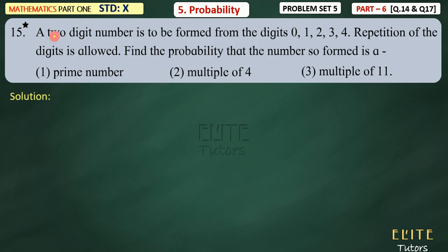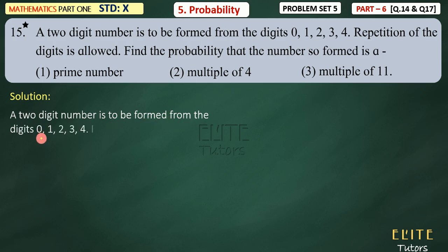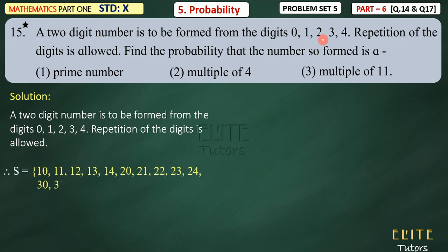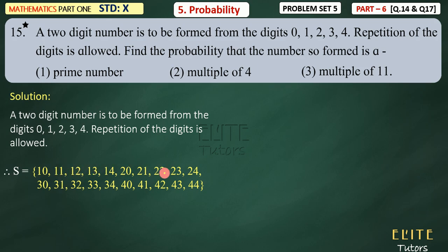Let's start writing the solution. A two-digit number is to be formed from the digits 0, 1, 2, 3, 4. Repetition of the digits is allowed. We will write the sample space: 10, 11, 12, 13, 14, 20, 21, 22, 23, 24, 30, 31, 32, 33, 34, 40, 41, 42, 43, 44. The repetition word allows numbers like 11, 22, 33, 44 to be included. If we count it, N(S) = 20 — the total number of two-digit numbers is 20.